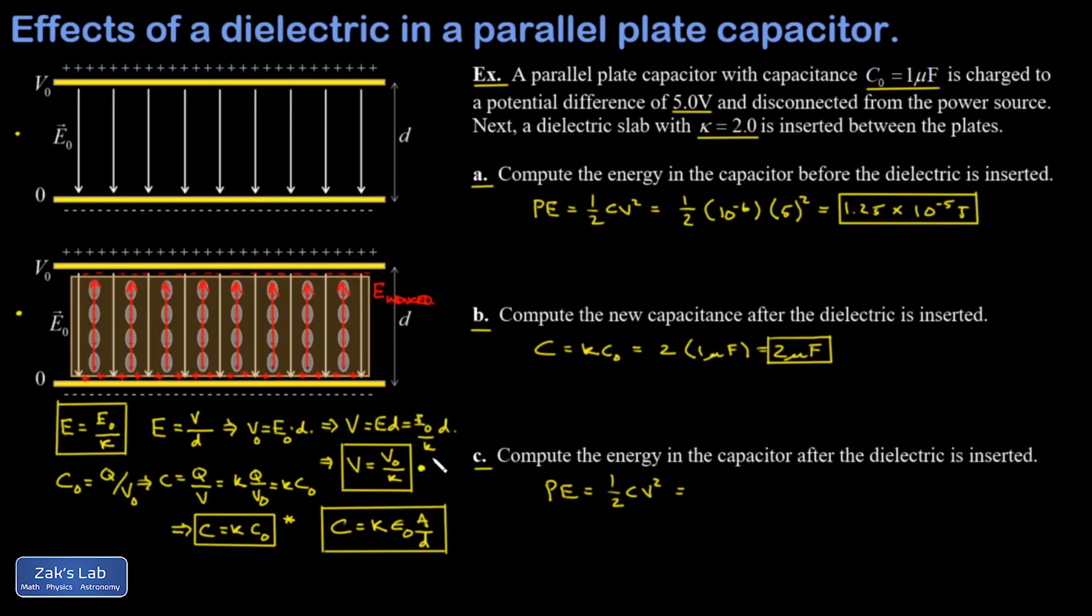We derived a little formula for that when the dielectric is inserted. So I end up with one half kappa C naught times V naught over kappa all squared. One factor of kappa is going to cancel, and I end up with a one over kappa out in front times one half C naught V naught squared. In other words, the potential energy goes down by a factor of kappa, just one more formula for the list.